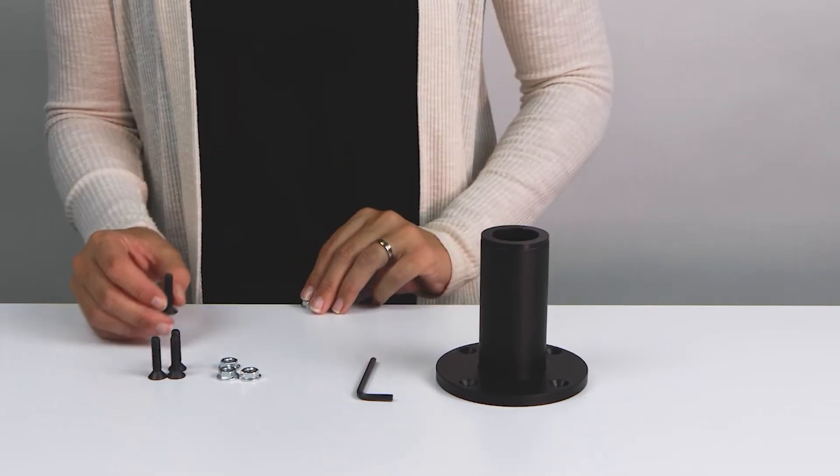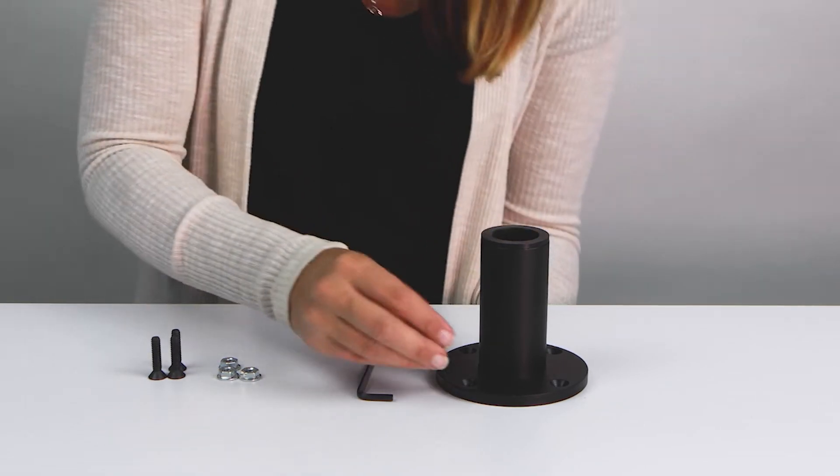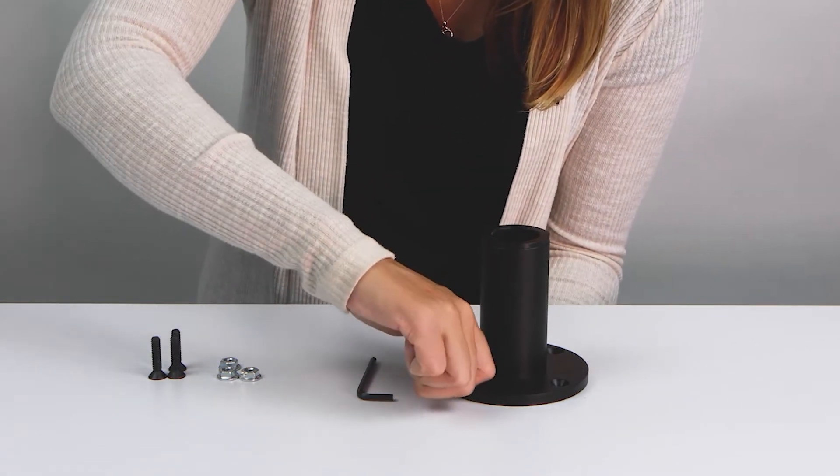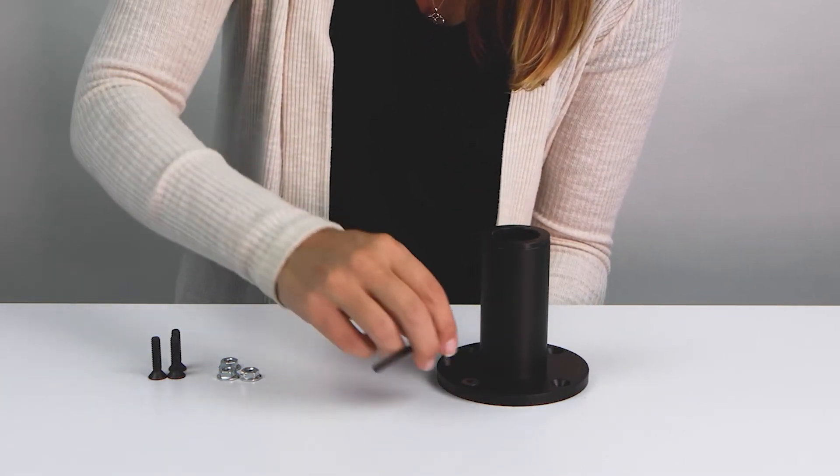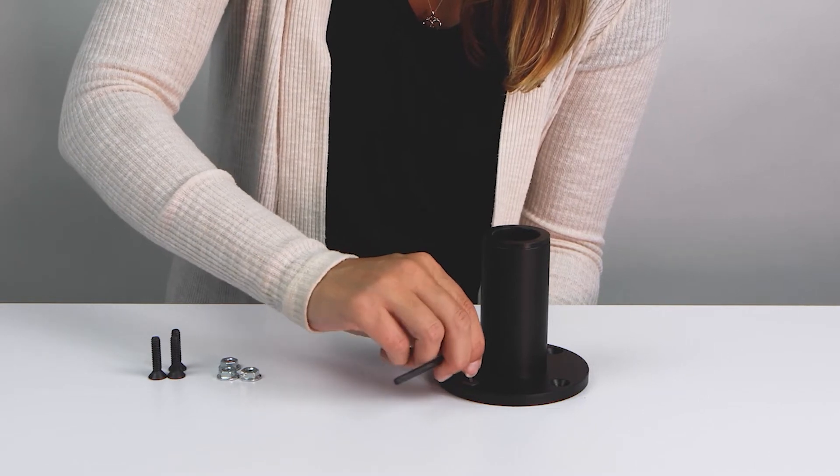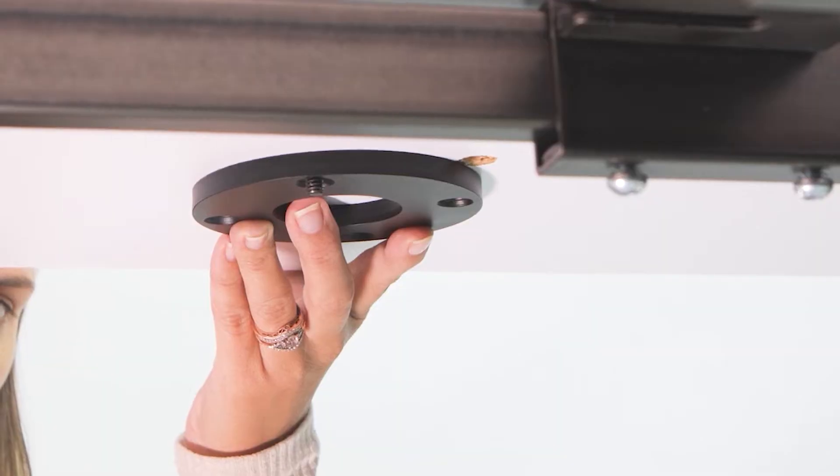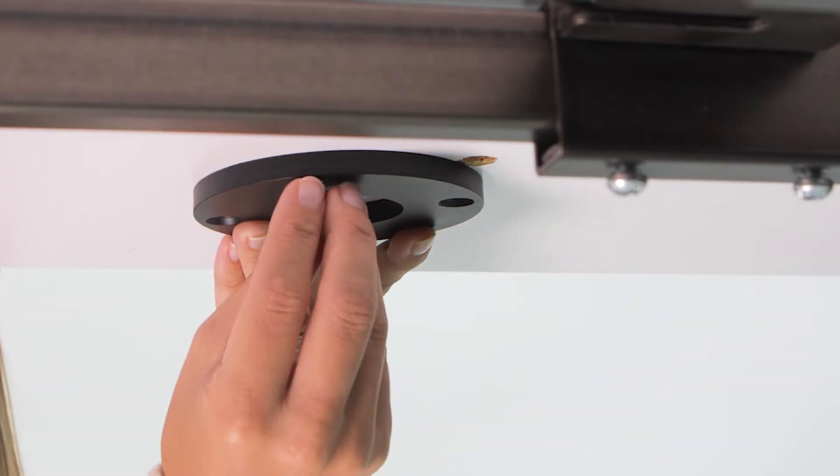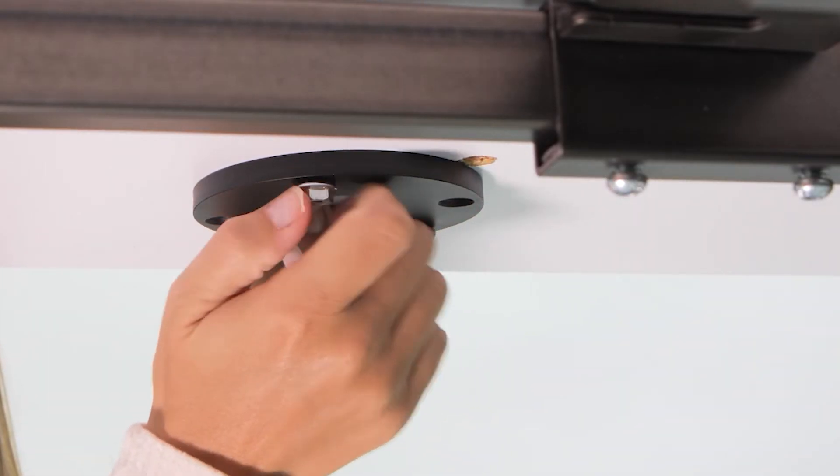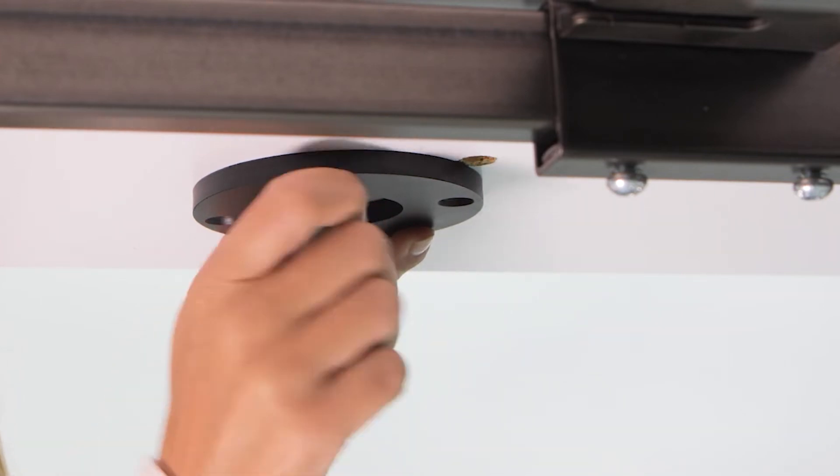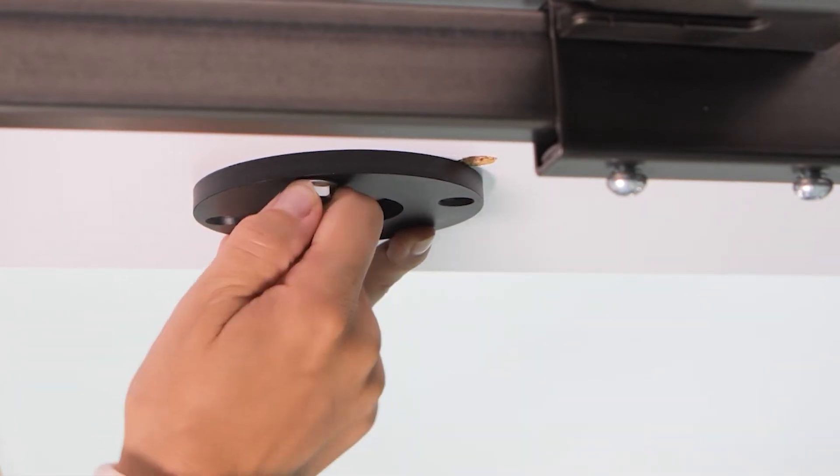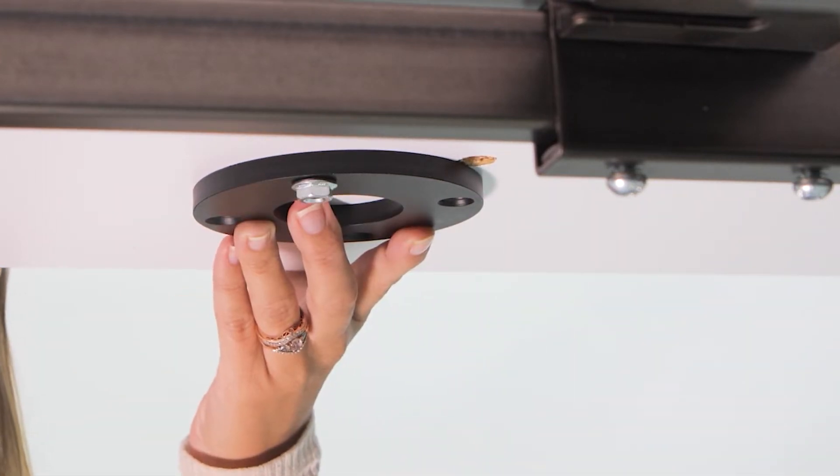Mount the base into your surface using the four provided quarter-twenty FHSCS fasteners with the 5-32 inch Allen wrench. Next, apply the pole mount flange under your work surface with the countersunk holes facing up sliding over the fasteners. Secure the fasteners to your work surface using the four quarter-twenty steel flange nuts provided.